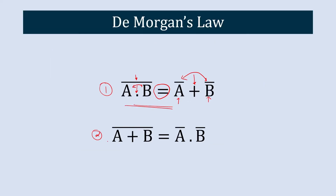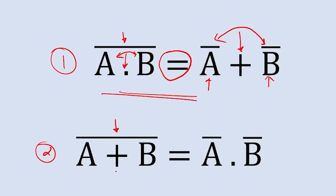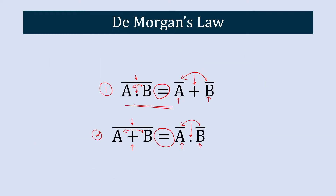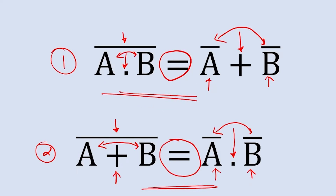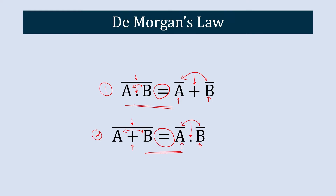The second law states that the complement of an OR operation between two variables is equal to the AND operation between the complements of each variable. So these are the two laws of De Morgan's theorem, and now we will start with the first law.